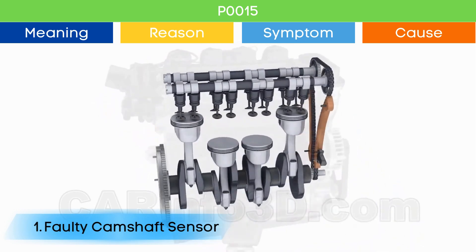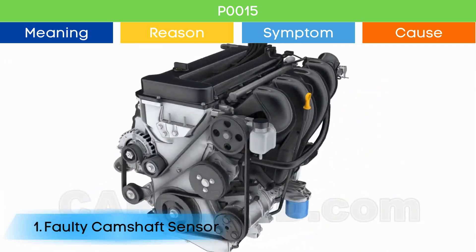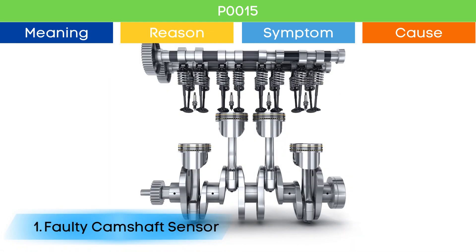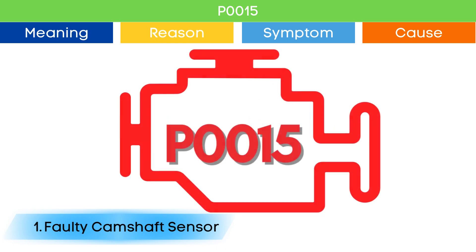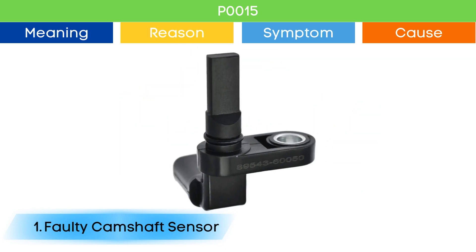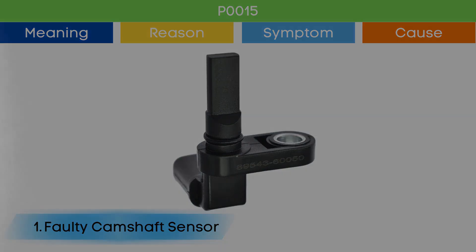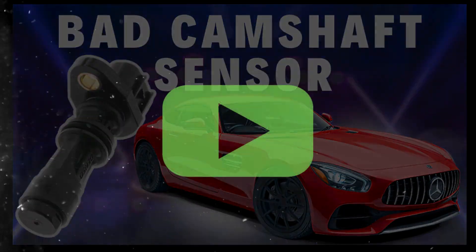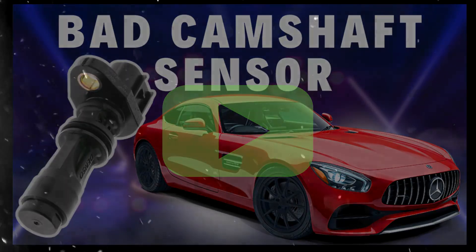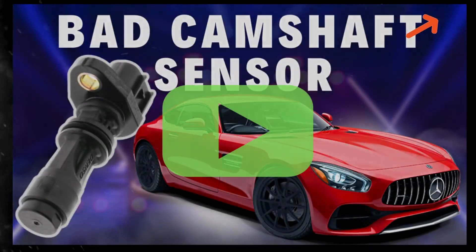Cause number one: bad camshaft position sensor. Due to the malfunction of the camshaft position sensor, the ECU may detect an engine timing error, which may trigger P0015 and other OBD-II codes related to camshaft position sensors, along with symptoms of a bad camshaft position sensor. Check our detailed video to learn more — link in the corner.